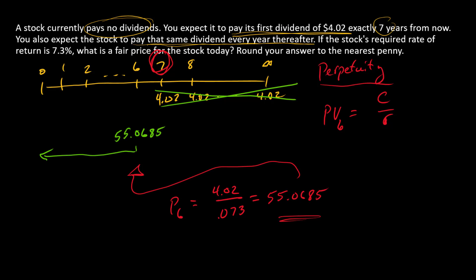Now we can find the price at time zero by simply bringing that back or discounting it six periods. So the answer here, P0, is $55.0685 divided by 1.073 raised to the sixth power.